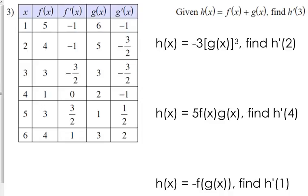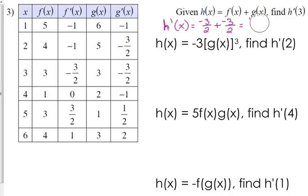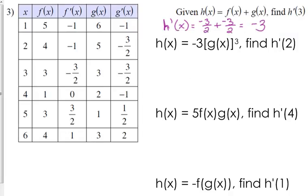So h prime of 3 when h of x is f of x plus g of x: f prime of 3 is negative 3 halves plus g prime of 3 is negative 3 halves. So we have negative 6 halves, which is negative 3.